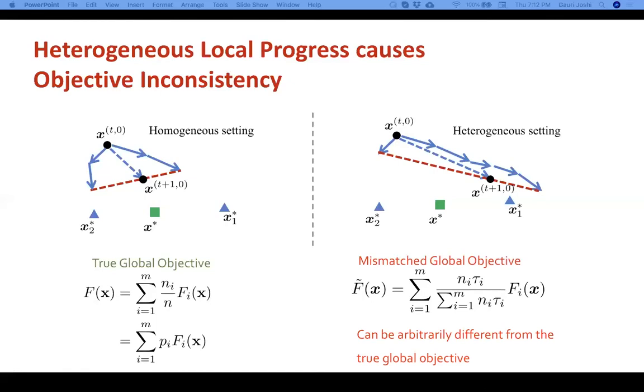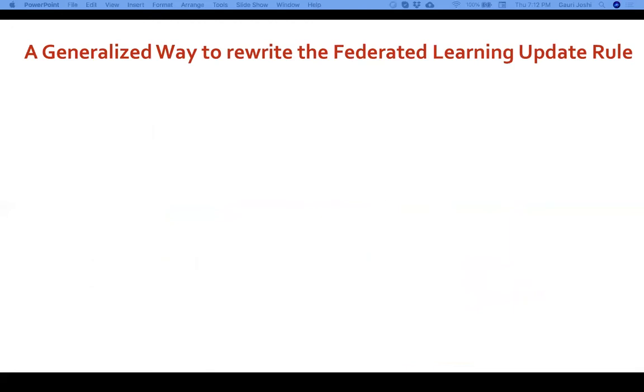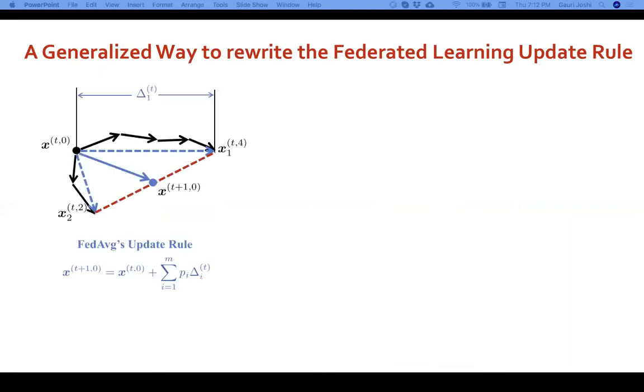So a way to fix this problem is to aggregate the local updates in a different way. Now, in order to understand what is the right way to aggregate local updates, we came up with a generalized rewritten version of the federated learning update rule. Let me explain that by first recalling what the original federated averaging update rule is, given by this equation. What we do is that in every communication round, we take the local progress performed by the ith node, denoted by delta_i. It's just the total distance that that client moves away from the previous version of the model. Then we aggregate these local progress values delta_i in proportion of the data set size, which is p_i.